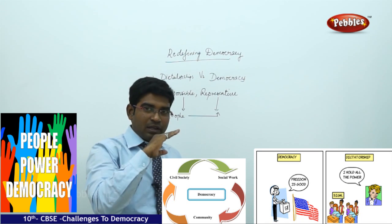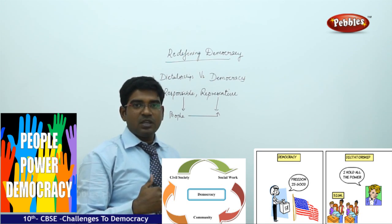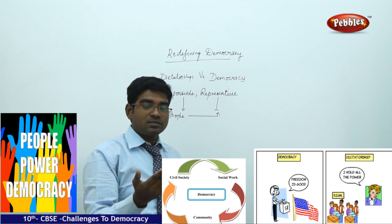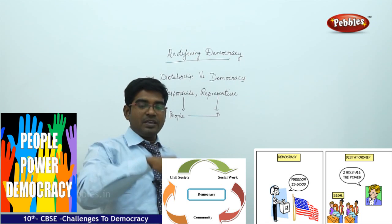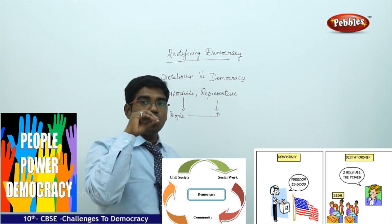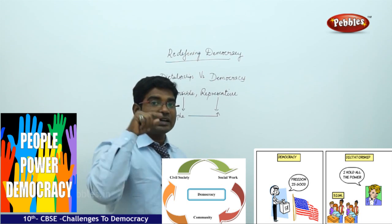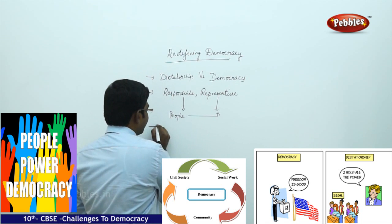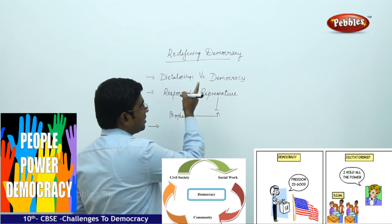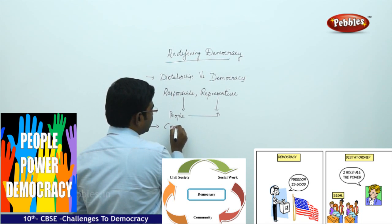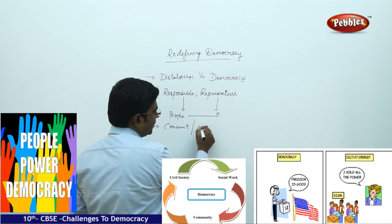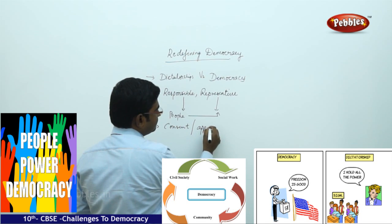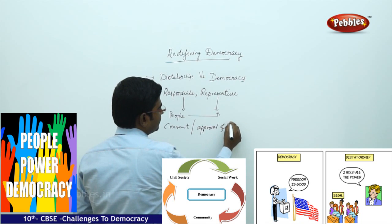The leaders are elected by the people. The leaders will be given the choice to rule only with the consent of the people. So the underlying power factor for democracy is the consent or the approval of the people.